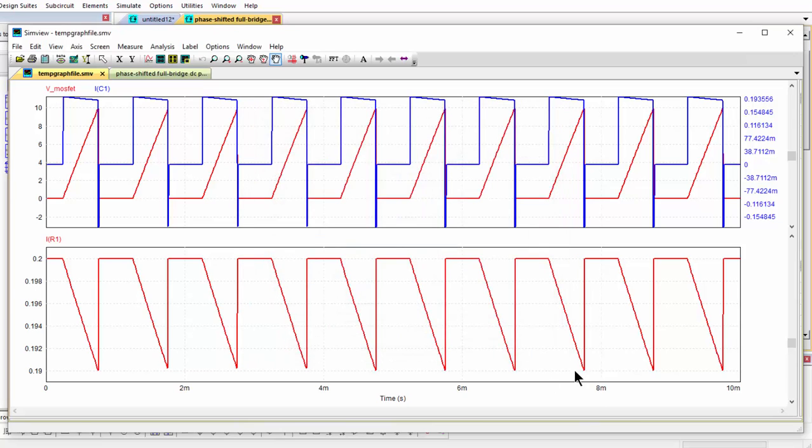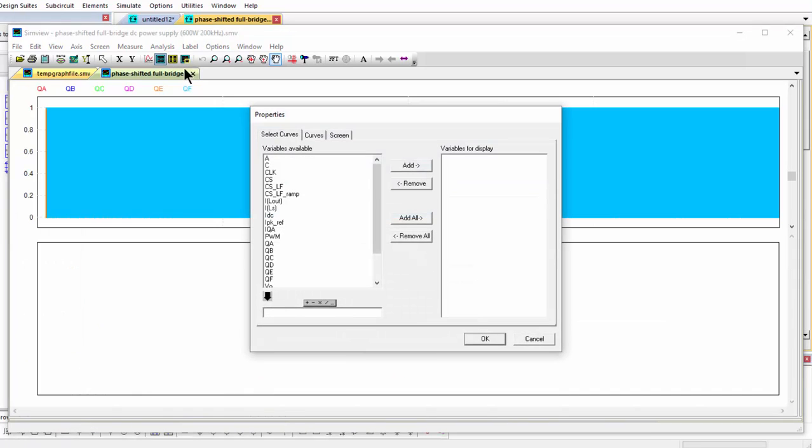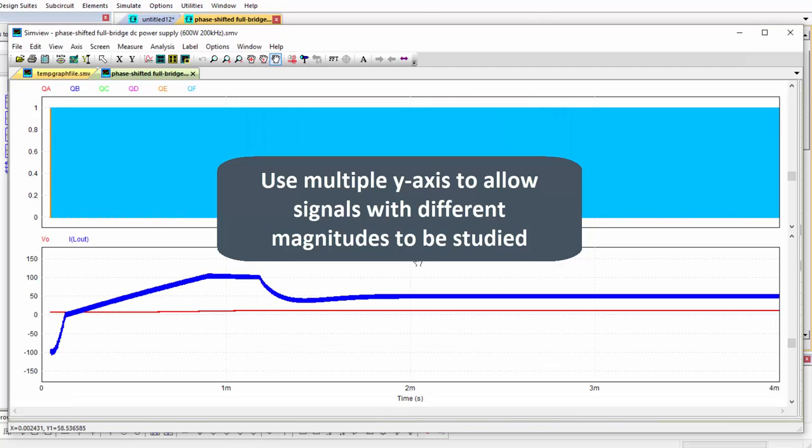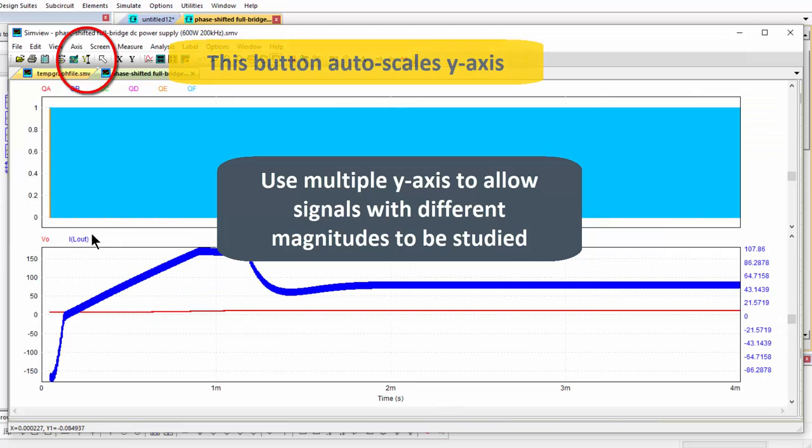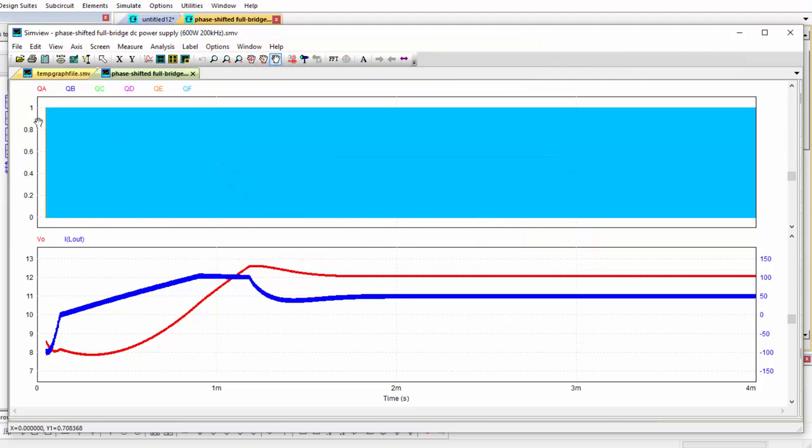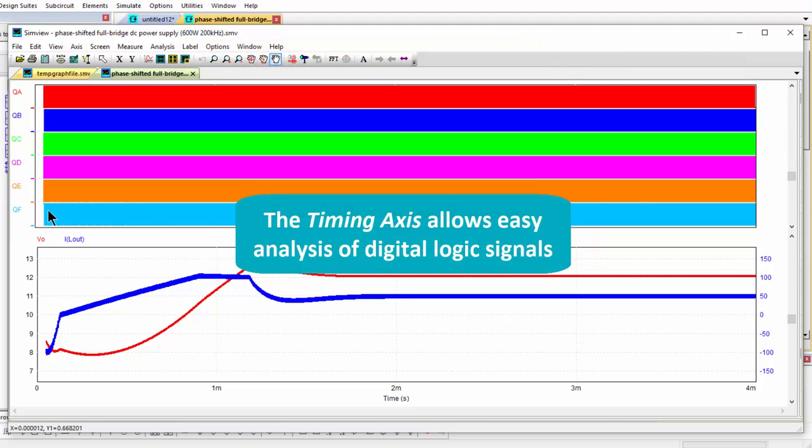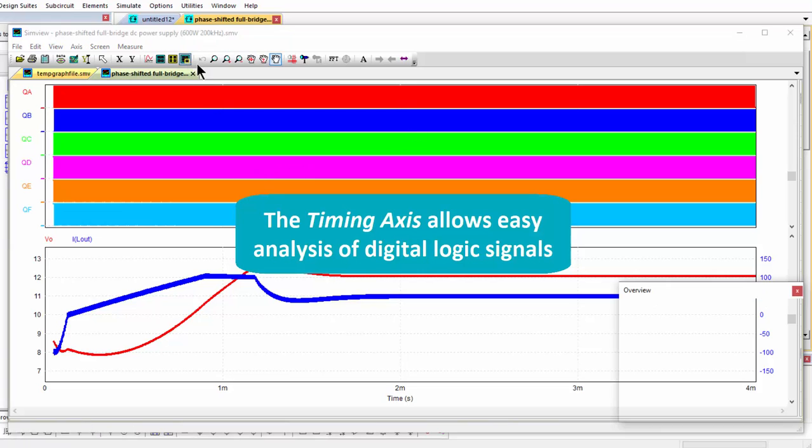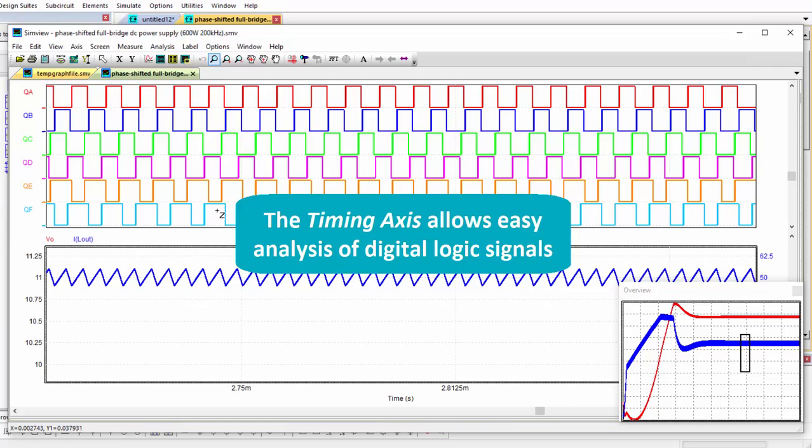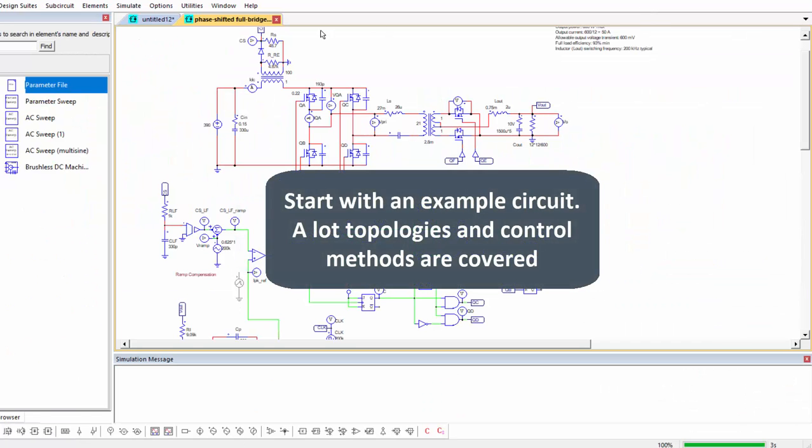So running the phase shift full bridge converter, we can plot all these gating waveforms and then add a new screen and add in the output current and output voltage. And we can do the same sorts of tricks by plotting them onto multiple axes. And we can see things also here by right clicking and switching to the alternate timing axis, and now we're able to do things like zoom in on portions of the circuit. So there's lots that you can do with PSIM and definitely the example circuits is a great place to start.